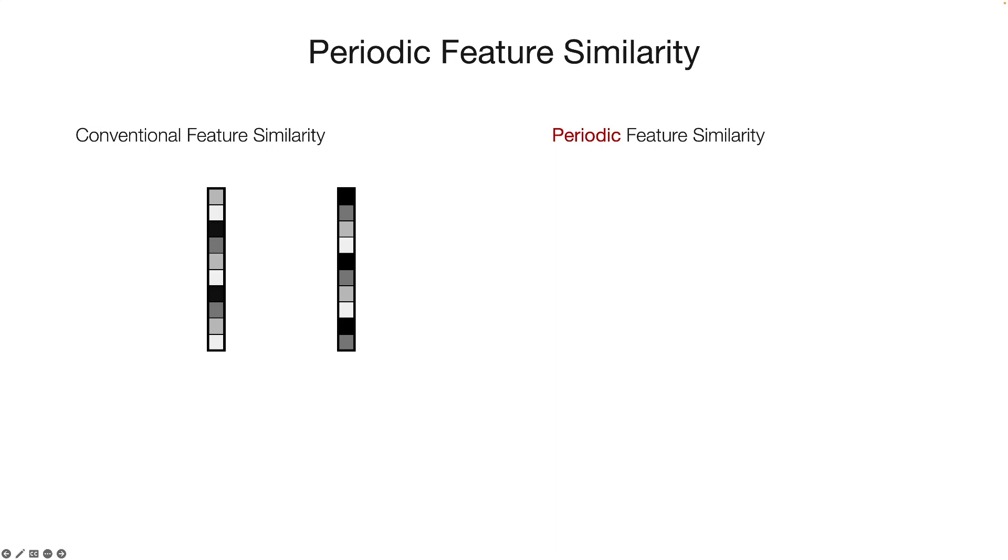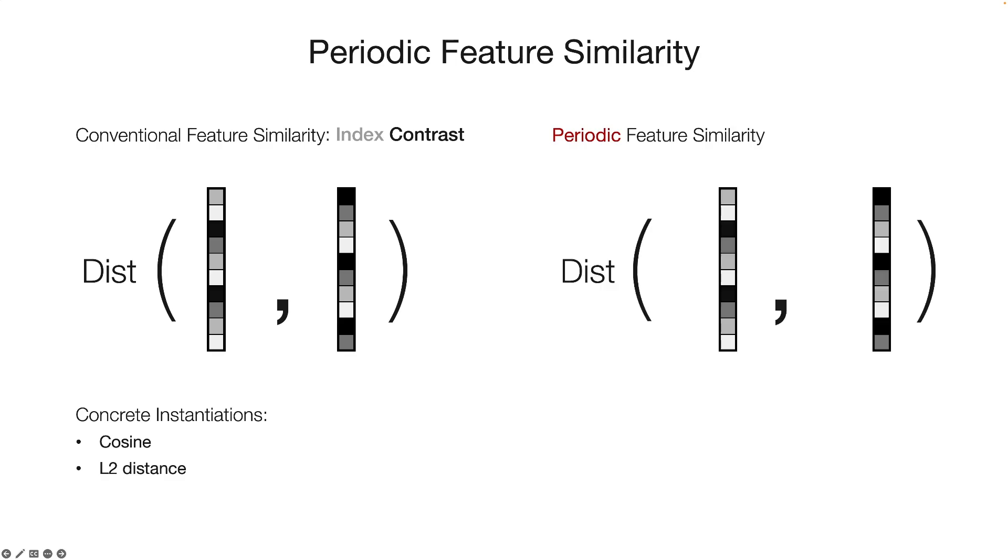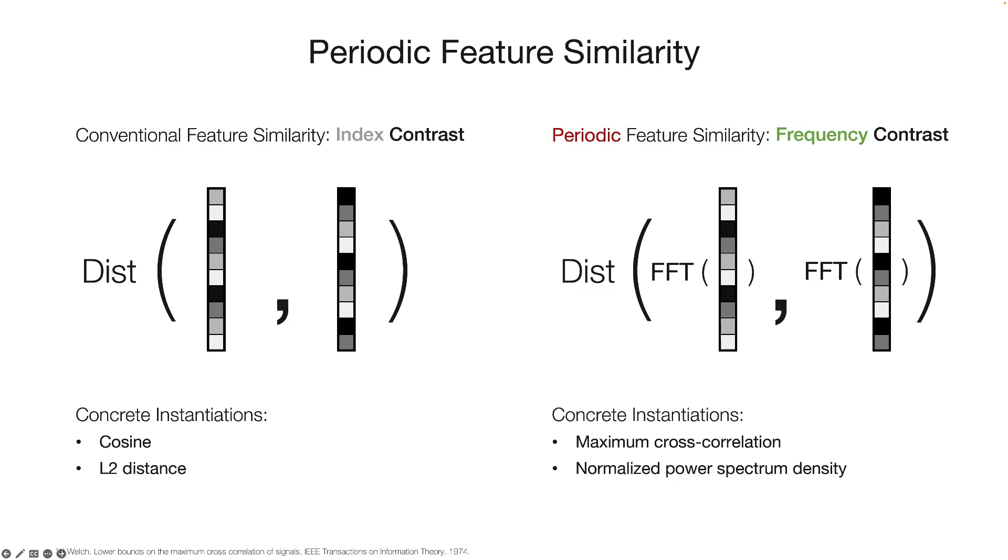Concretely, given two feature vectors, existing similarity measures leverage a distance function over the feature indexes, where cosine or L2 distances are usually used. This corresponds to an index contrast scheme. In contrast, in periodic feature similarity, instead of directly measuring the distance in the time or the index space, we first convert the feature vectors into frequency domain, and then compute the high dimensional distance, and this corresponds to a frequency contrast scheme, which enforces periodic features. We provide two practical instantiations for periodic feature similarity, including the maximum cross correlation and the normalized power spectrum density.